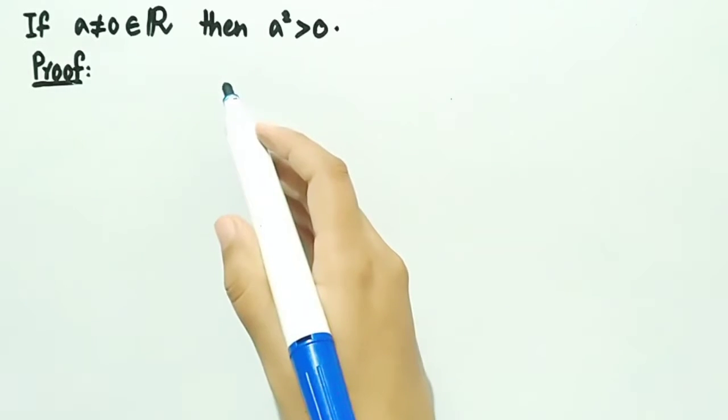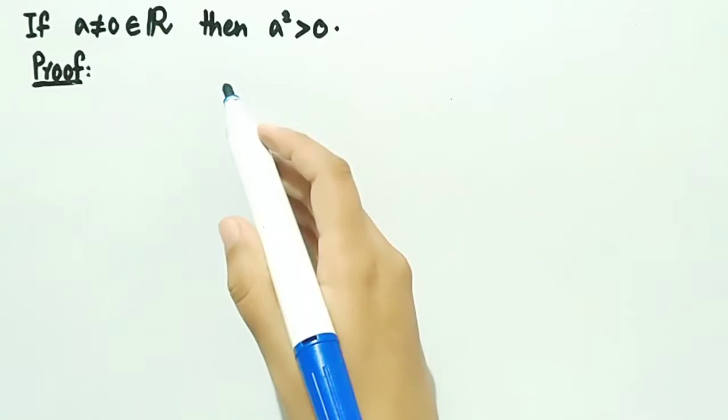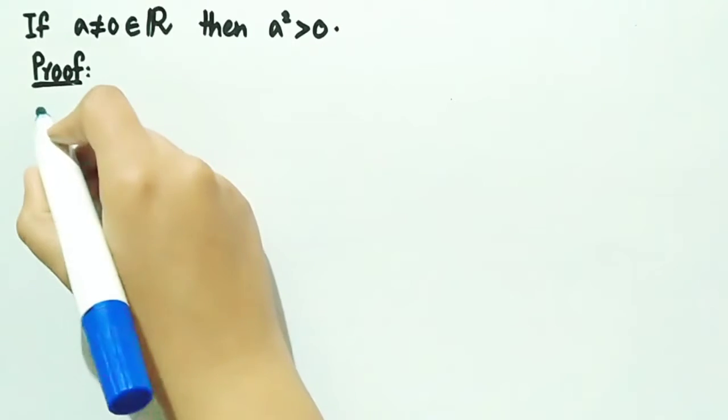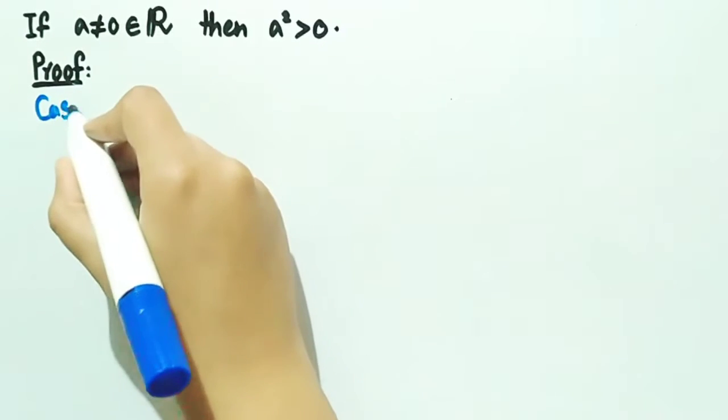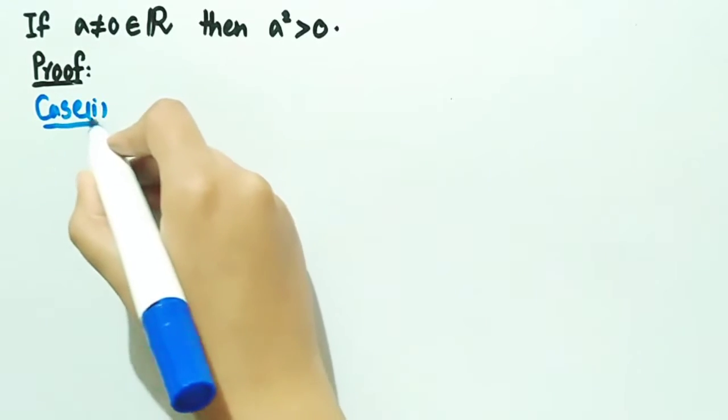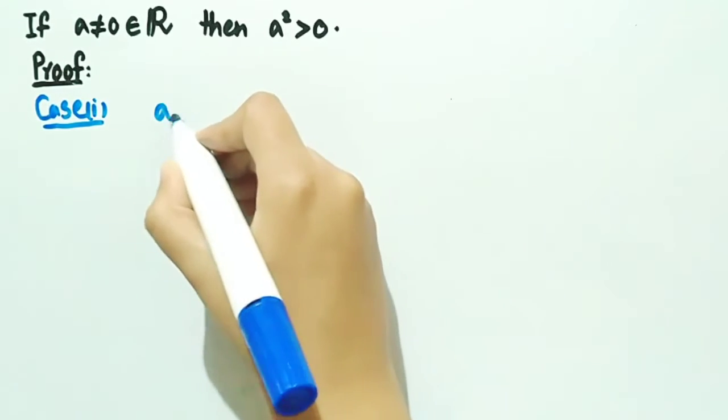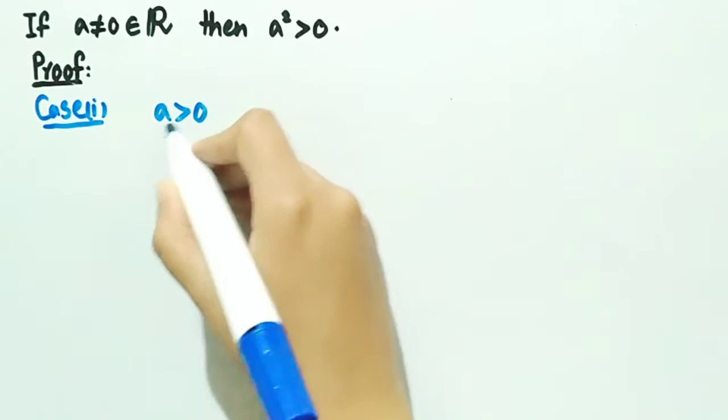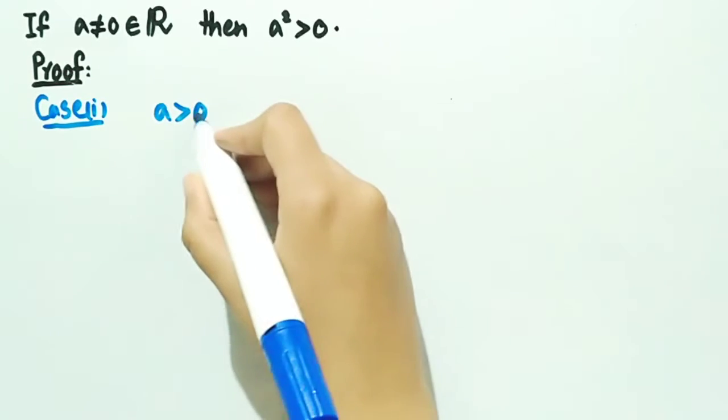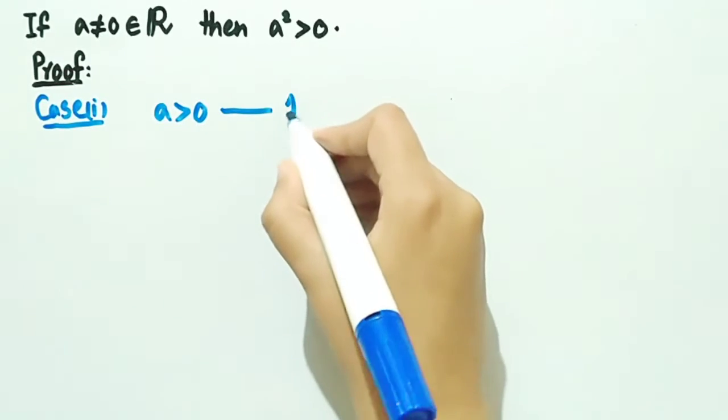In case 1, we will take a as a positive real number, and in case 2, we will take a as a negative real number. Let's discuss case 1. In case 1, we consider a greater than zero, that is a is a positive real number, and let it be named as equation number 1.